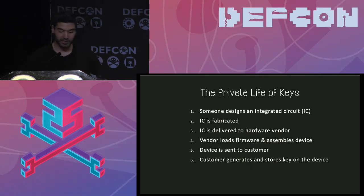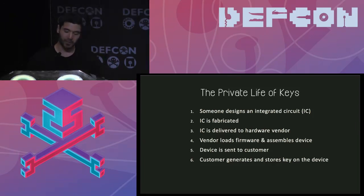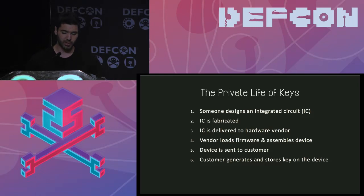Let's think about a private key and public key pair. How do we generate that? Someone somewhere designs an integrated circuit, which is then fabricated at a foundry somewhere else. The IC is delivered to the hardware vendor, who loads firmware and assembles the device, then sends it to the customer, who generates and stores the key on it.